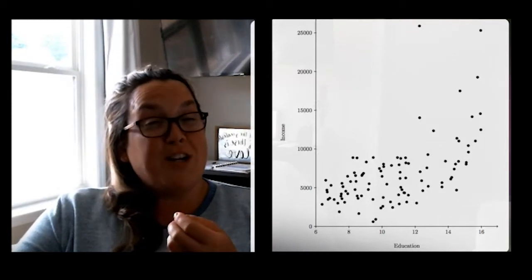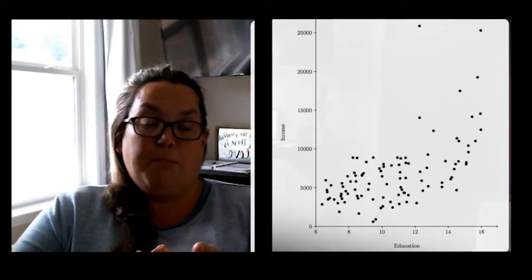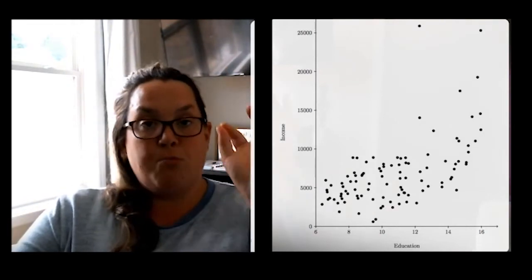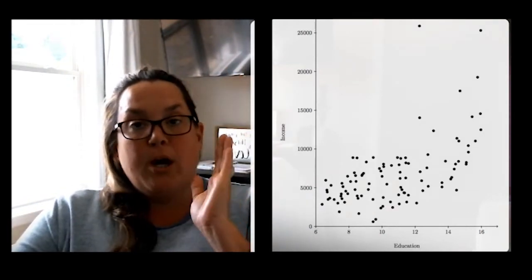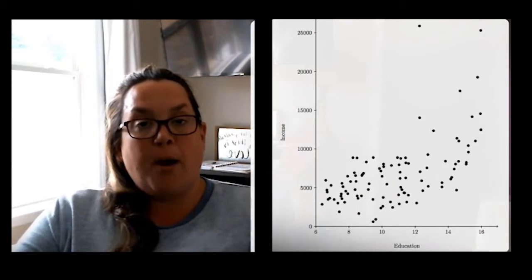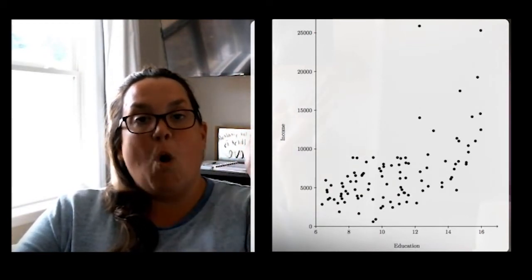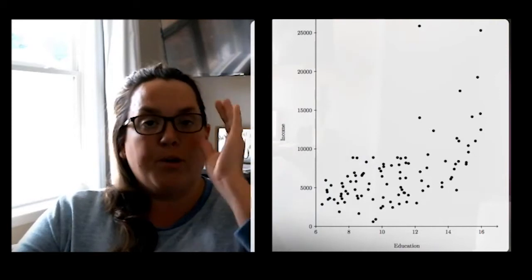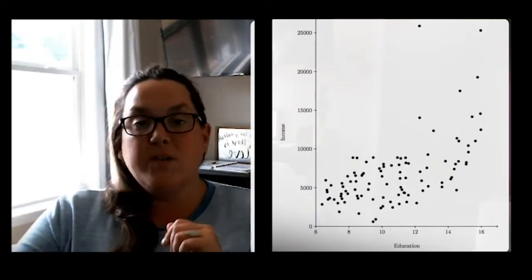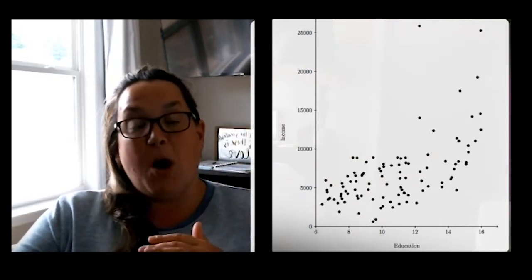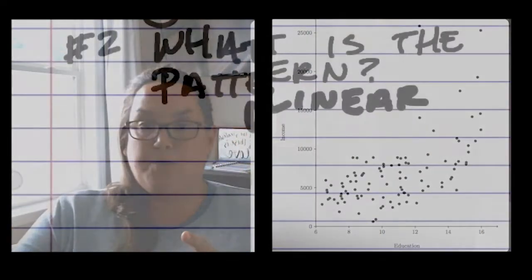Question three is, what is the direction of the relationship or the pattern? If you notice, when you look at the x-y, and remember you read it like you read a book, so as you progress from the left to the right, you can see that the y variable or income increases as education increases. So as x is increasing, y increases as well, which makes it positive.